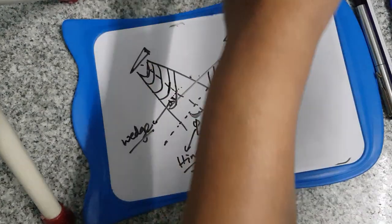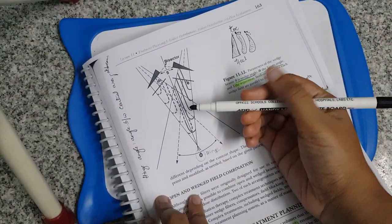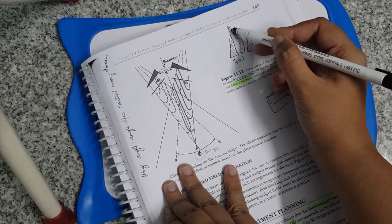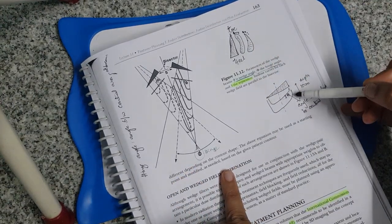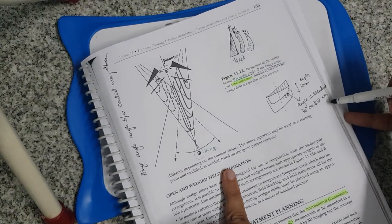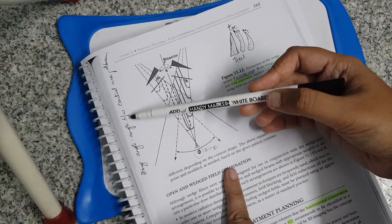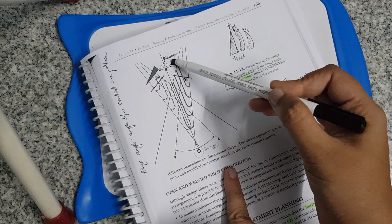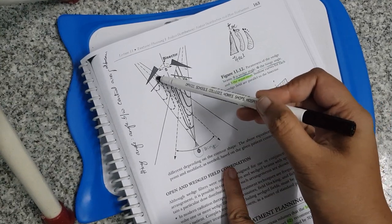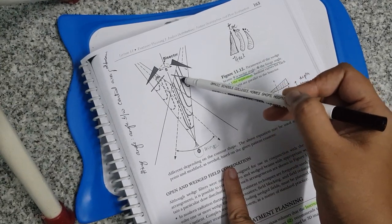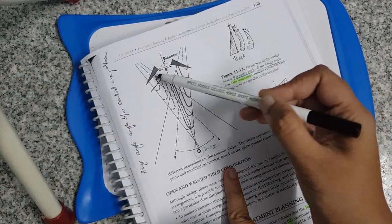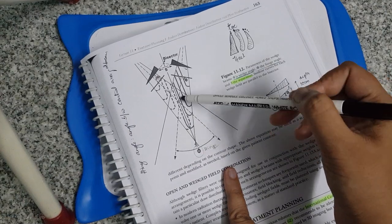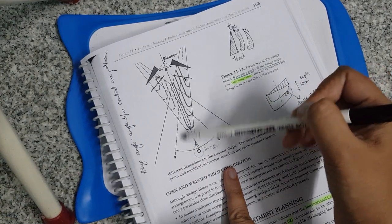Just to mention the terminology: on a wedge, the thick end is called the heel and the thin end is called the toe. We usually measure the wedge angle at a depth of 10 centimeters. To summarize: the wedge angle is the angle subtended at the central axis, and the hinge angle is the angle between the central axes of two beams.